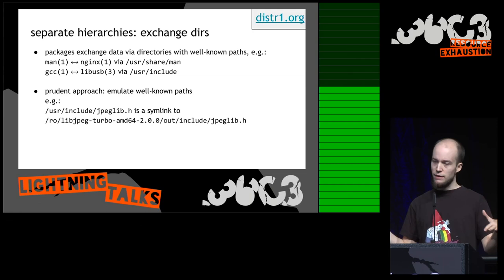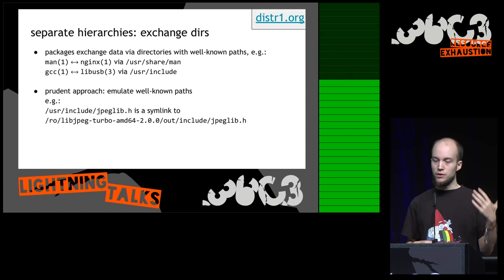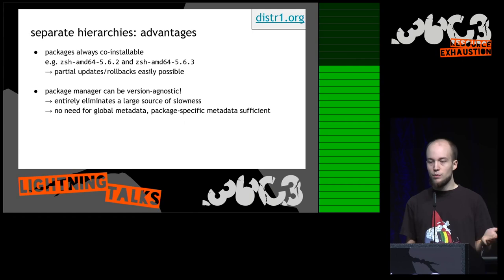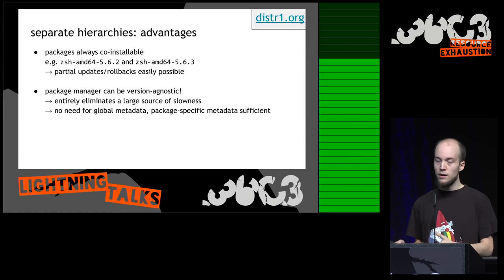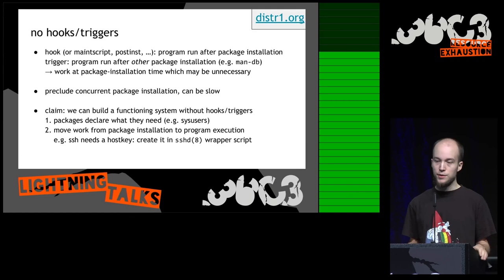With separate hierarchies, you might wonder how programs still communicate, since they use well-known paths. For example, a man page viewer looks up files in /usr/share/man, and a C compiler looks in /usr/include. In distri, we emulate these well-known paths using symlinks pointing to fully qualified files. The advantages: all packages are always co-installable — if an upgrade breaks your config you can easily use the older version. More importantly, the package manager can be entirely version-agnostic, eliminating the need to fetch global metadata.